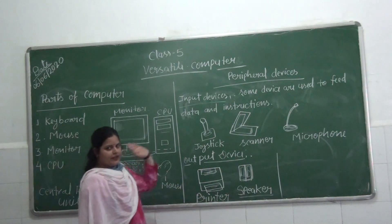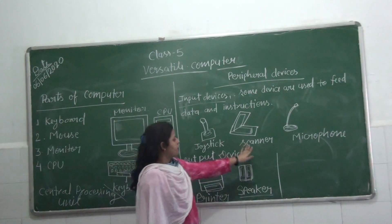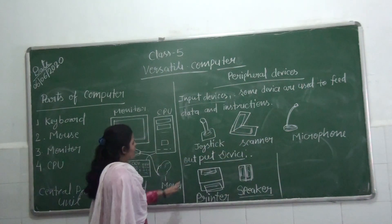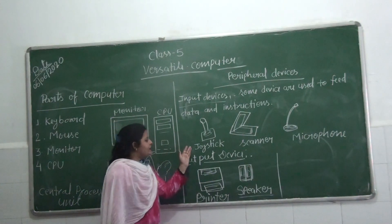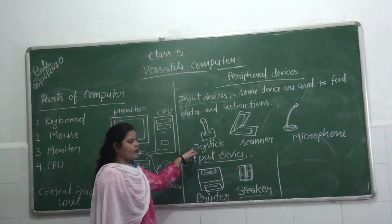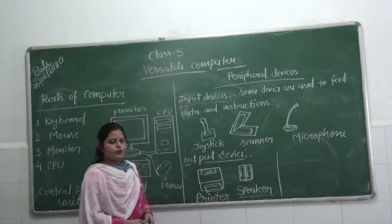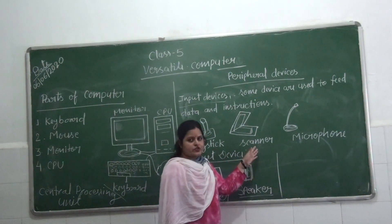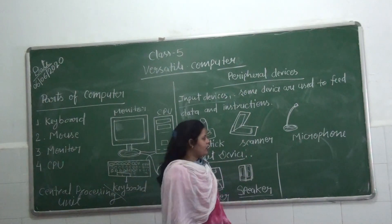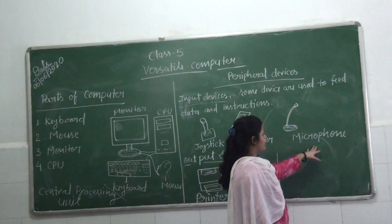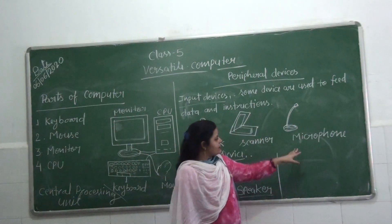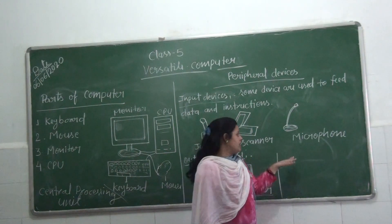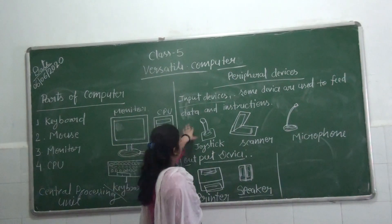The peripheral input devices are joystick, scanner, and microphone. The joystick is used to play games on the computer. The scanner is used to feed images or documents into the computer. The microphone is used to record sound and voice. These are some input devices.